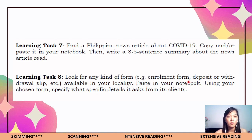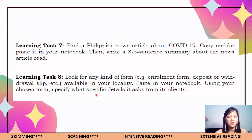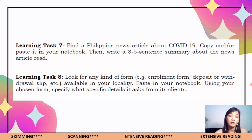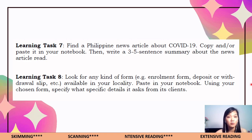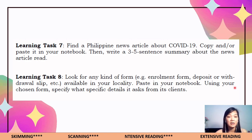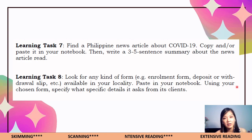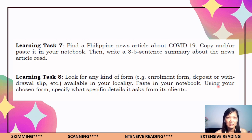For Learning Task Number Eight: look for any kind of form — for example, an enrollment form, deposit or withdrawal slip — available in your locality or at home. Paste it in your notebook, then specify what specific details the form asks from its client. For example, you could use a four-piece form: photocopy it, paste it in your notebook or booklet, and specify what details are asked — such as address, school, name of the head teacher or principal, and where the child studies.